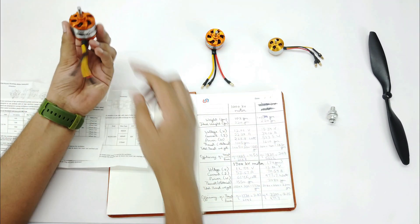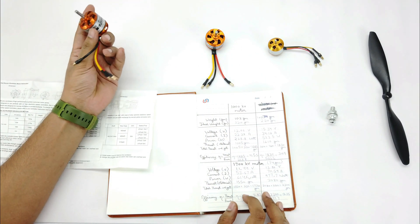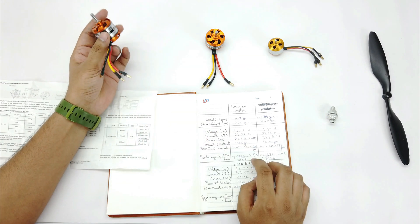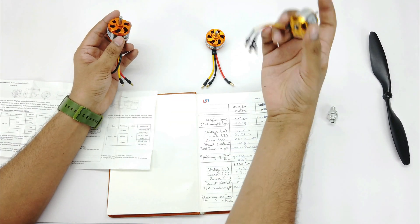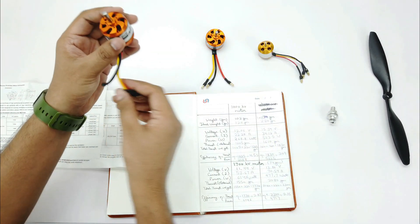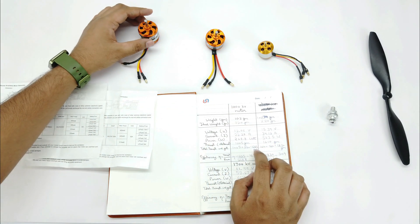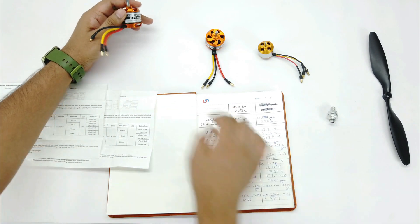Now we will talk about this 1000kV motor. It performed quite well and gave an efficiency of 4.55 which is quite similar to that of A2212 motor. The maximum thrust it gave was 1225 grams. So we can definitely use this motor.